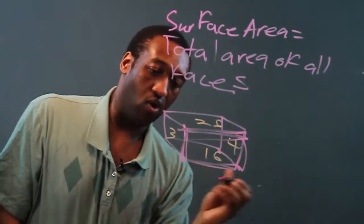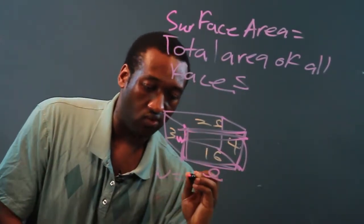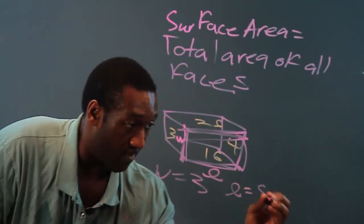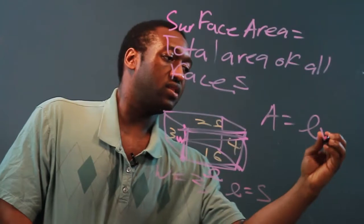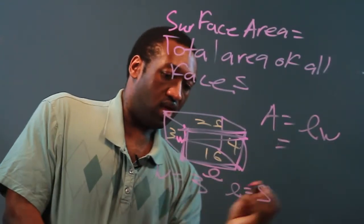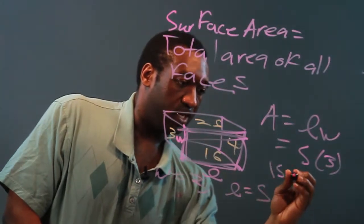Since they're all rectangles, I'll have a width and a length. Let's say the width is three and the length is five. So since it's a rectangle, the area is length times width. And we would have five times three, which is 15 square units.